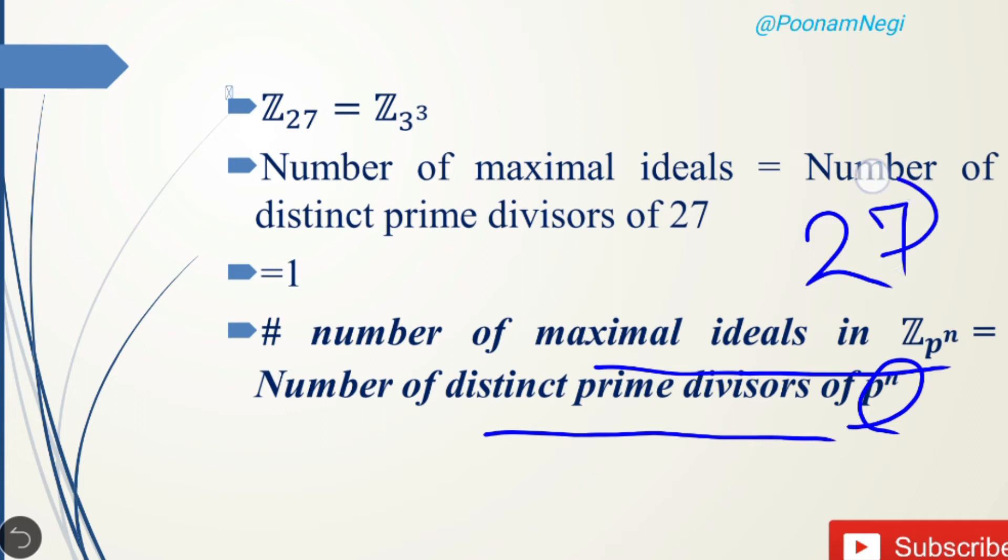of 27. Because 27 is nothing but 3 raised to the power 3, we need to find the number of prime divisors or prime factors of 27. As we know